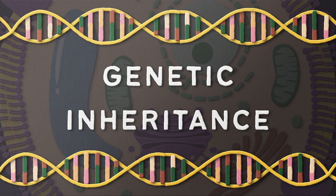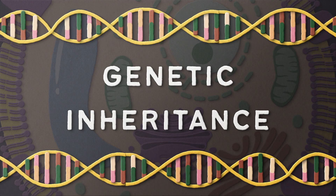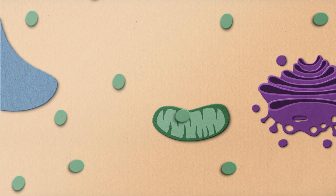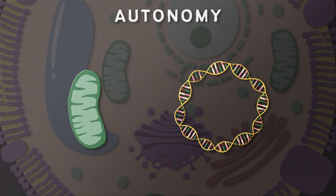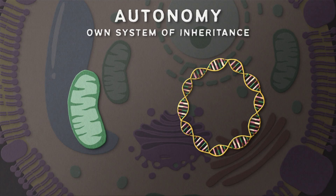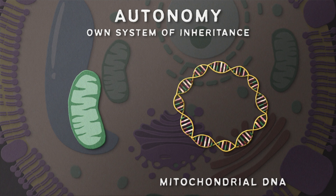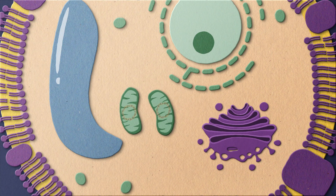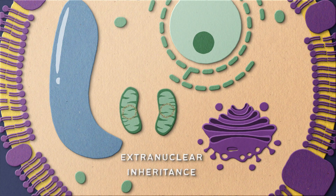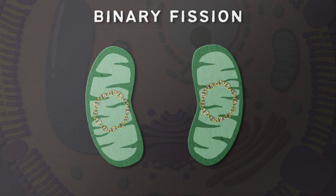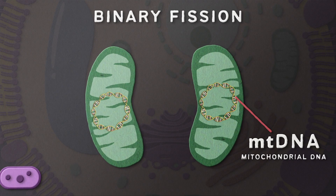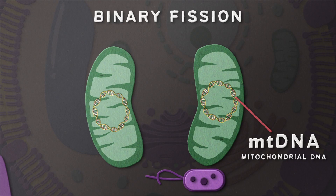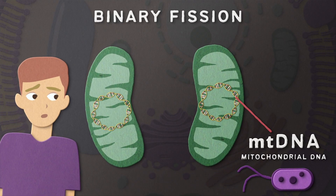A particularly unique aspect of mitochondria is their method of genetic inheritance. Unlike any other organelle in the eukaryotic cell, mitochondria are semi-autonomous — this autonomy refers to the fact that they have their own system of inheritance, complete with some of their own genes known as mitochondrial DNA, or mtDNA. This mtDNA is inherited independent of the nucleus, a process called cytoplasmic or extra-nuclear inheritance. Mitochondria replicate through binary fission, passing on their own unique genome that is much smaller than the nuclear genome and is circular in shape, much like genomes we see in bacteria. Hmm, suspicious, right? Remember that similarity for later.